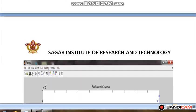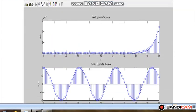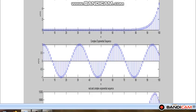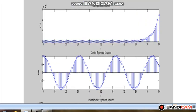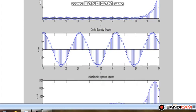When I will run this MATLAB program, I will get three graphs. First is for real exponential sequence. Second graph is for complex exponential sequence. And third graph is for real and complex exponential sequence. So, here I can see that real exponential sequence graph is non-periodic, whereas complex exponential sequence is periodic signal. So, this is all about my first experiment.